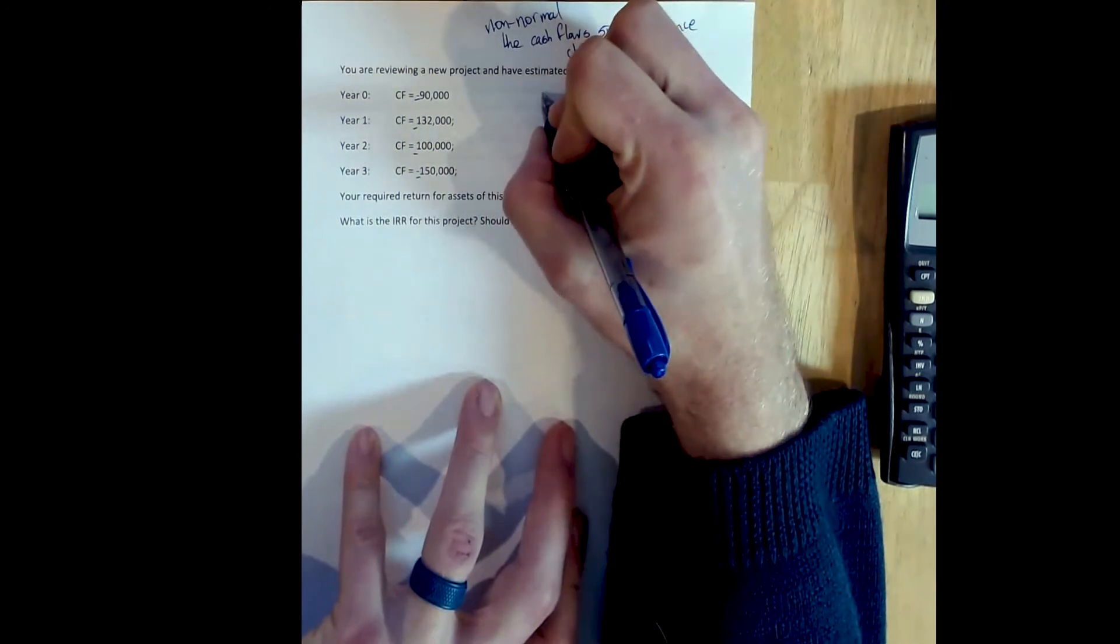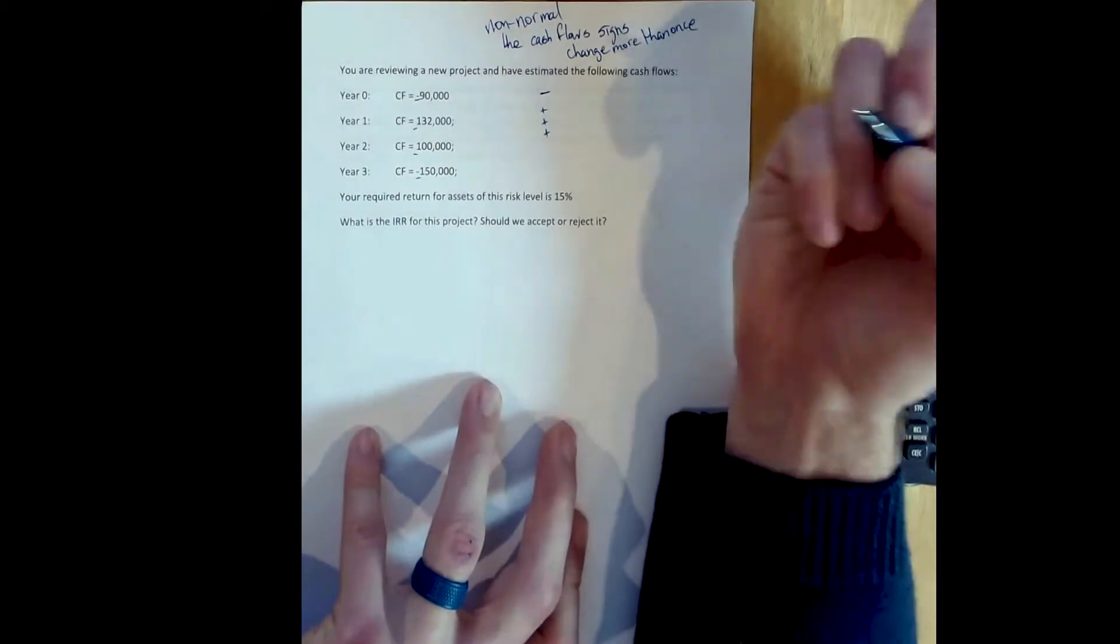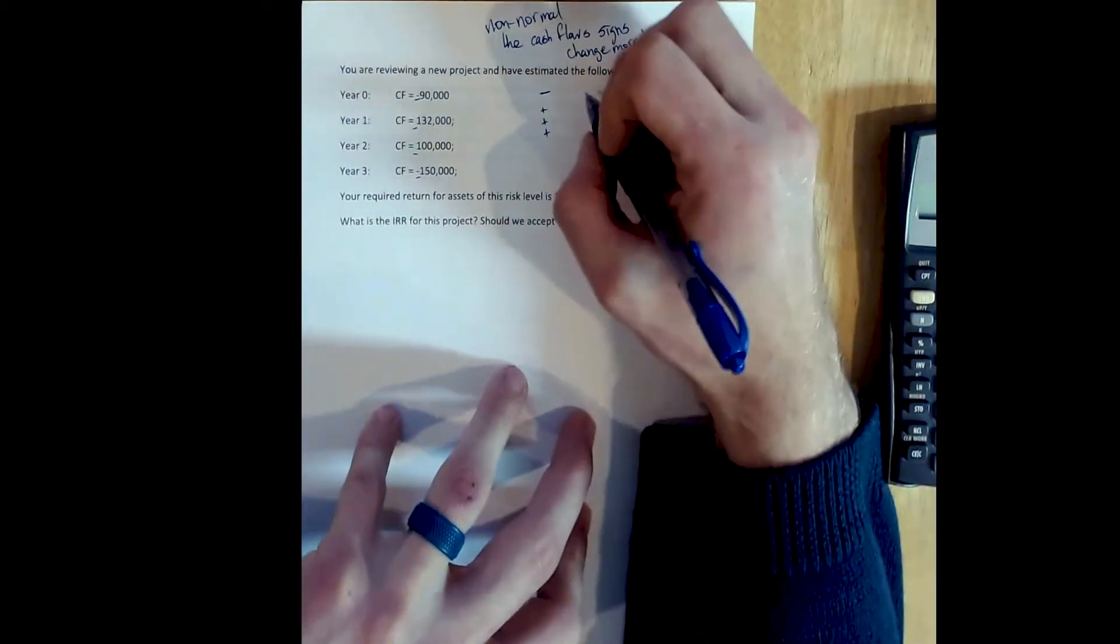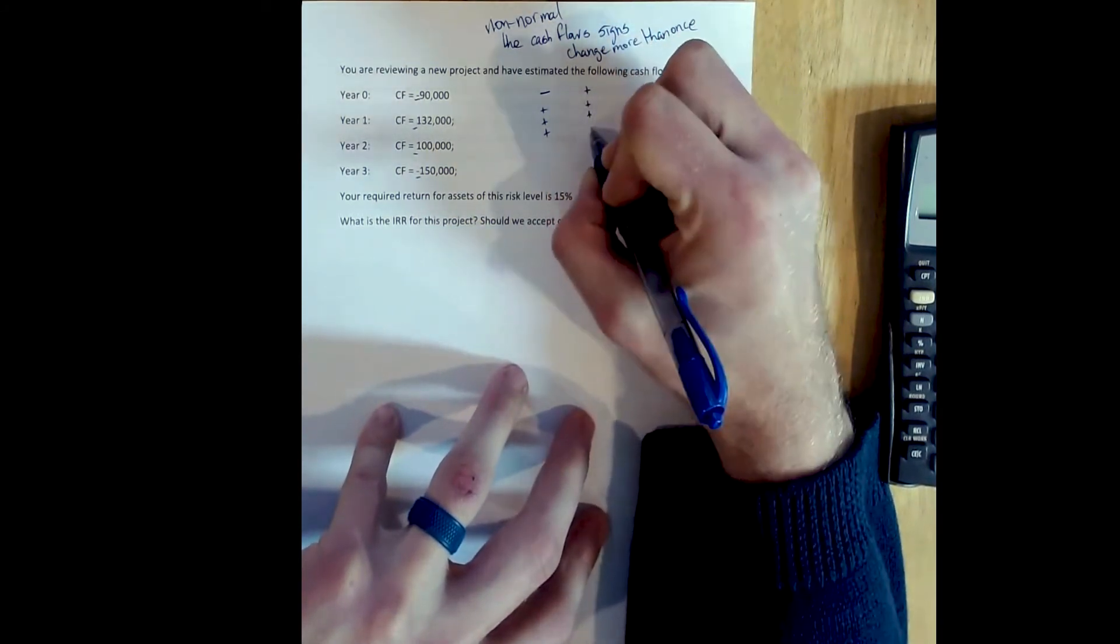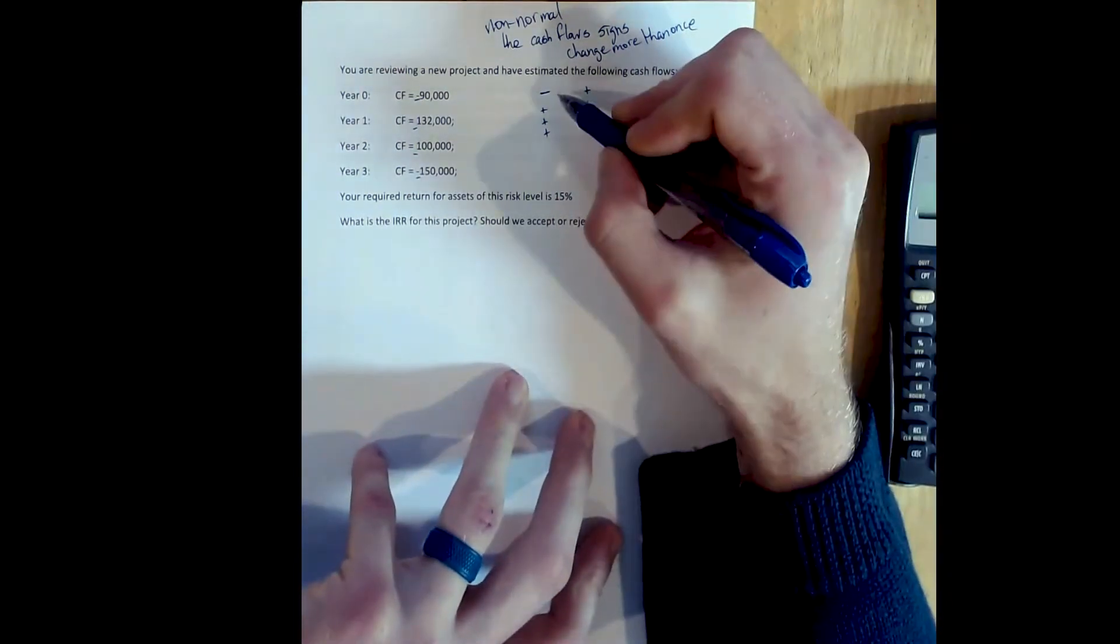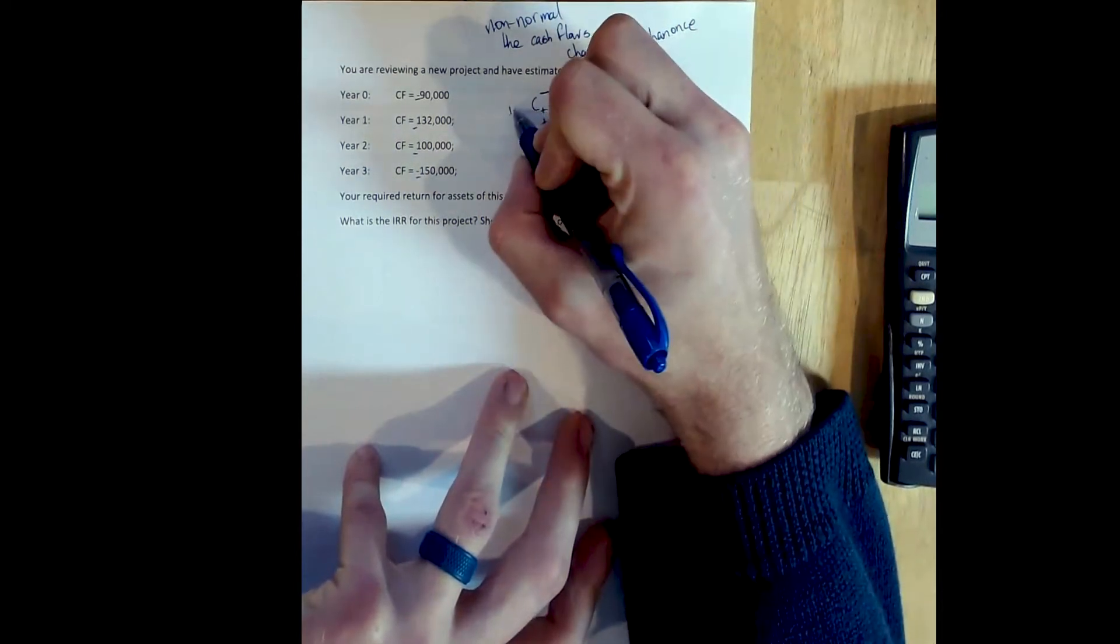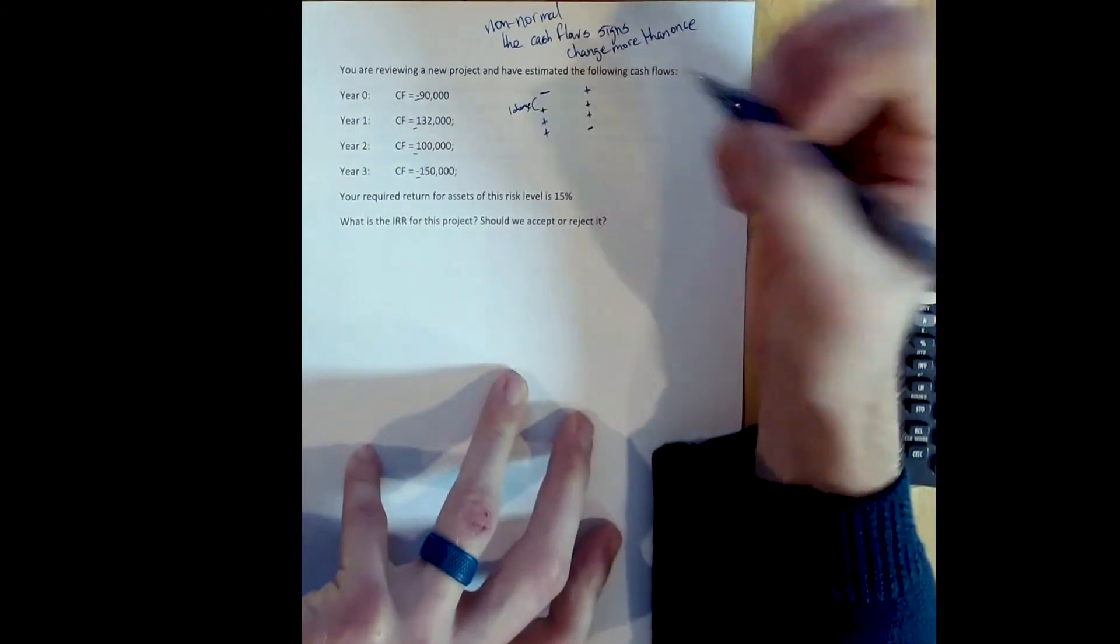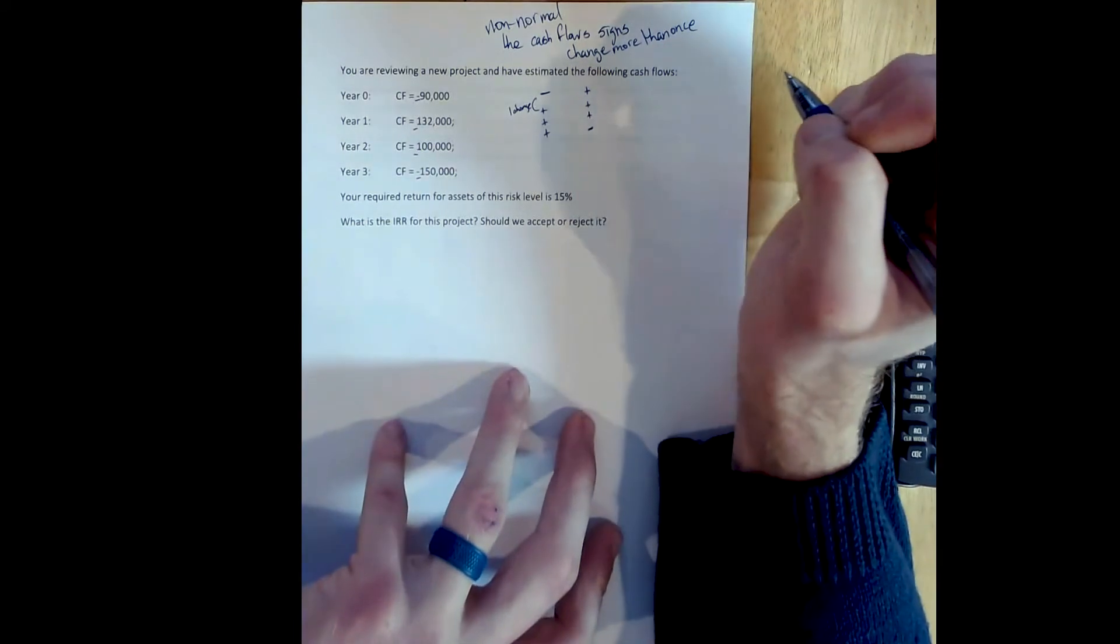A normal set of cash flows would have a negative cash flow, followed by a series of positive cash flows, like the problems we've been working so far. A normal set of cash flows could also look like this, where we have a series of positive cash flows, and then a negative cash flow to finish things off. These are normal specifically because there is only one change in cash flow signs. We change from negative to positive cash flows, and here we change from positive to negative. So normal specifically means we have one change.